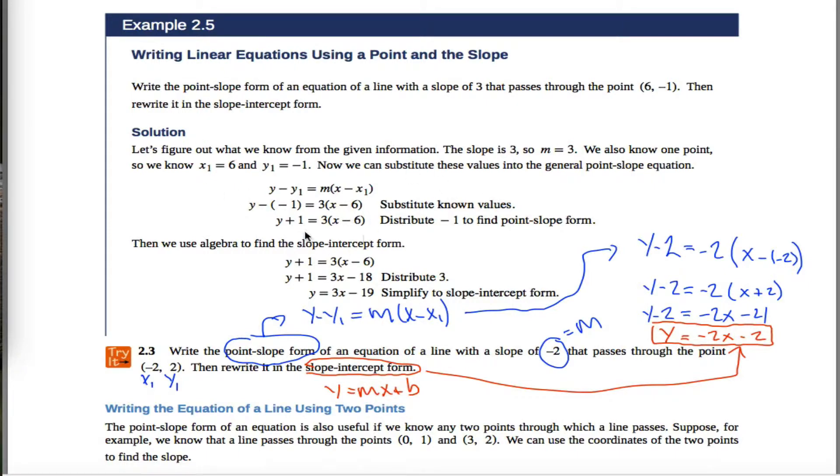But what I want to do is add a little something to this. This problem specifically asks you to write the point-slope form of an equation, then rewrite it in slope-intercept form. If it didn't ask you to do that, if it just asked you to write this equation in slope-intercept form - so pretend that's the case - you'd have two ways to solve that problem.